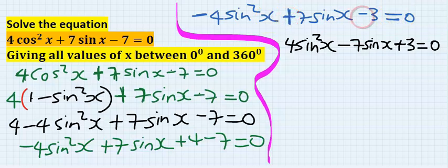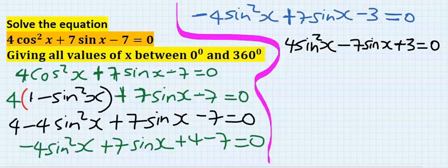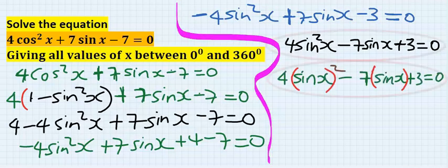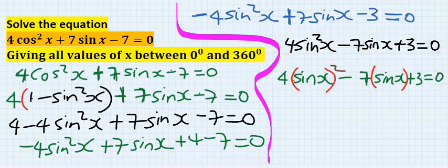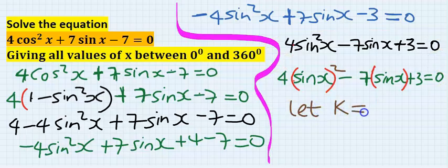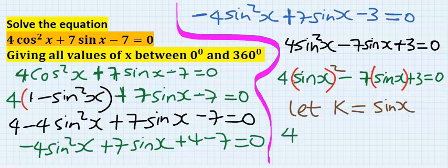If this negative four sine squared x moves over to the other side it becomes positive. If this moves over to the other side it becomes negative. If this minus moves over to the other side it becomes positive. I can write this as—these are both the same. Next, I will say let k—you can call this k, you can call it anything—let it be sine x.